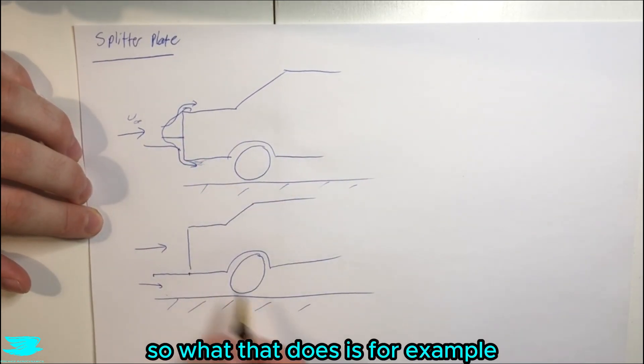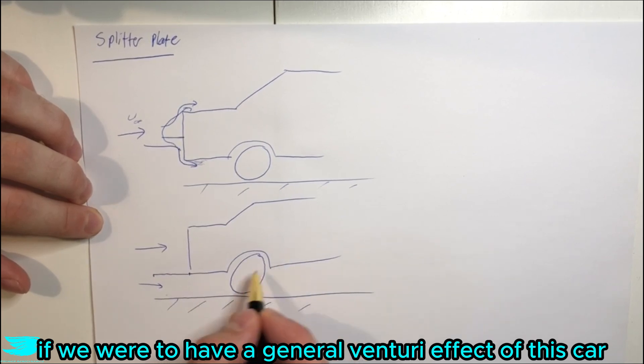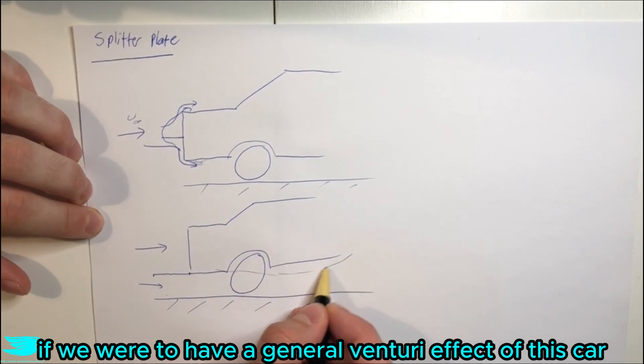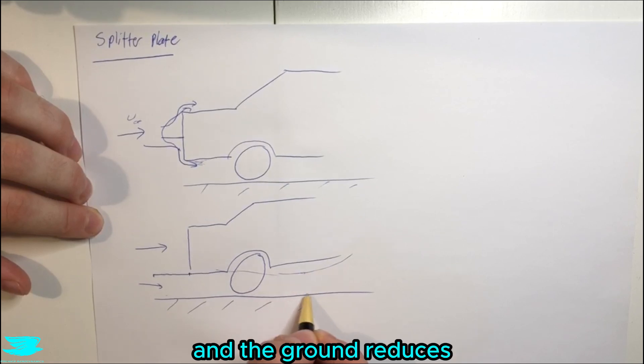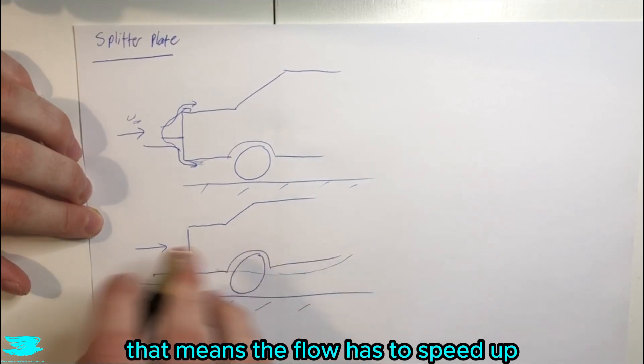So what that does is, for example, if we were to have a general venturi effect of this car, where the distance between the underbody and the ground reduces, that means the flow has to speed up.